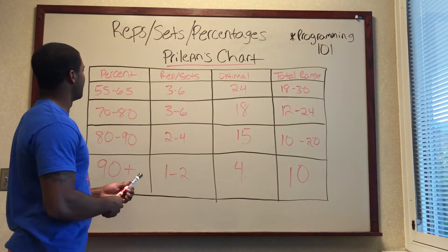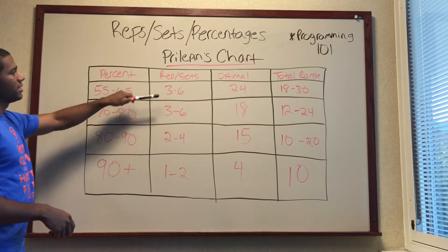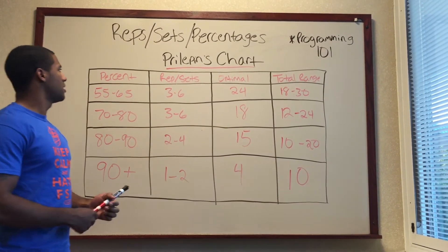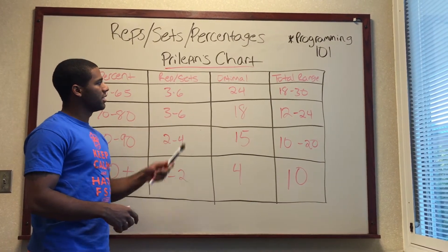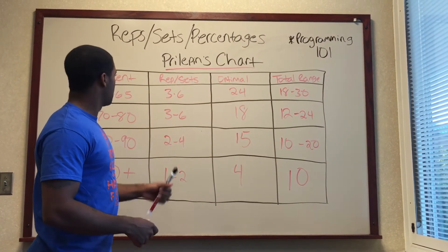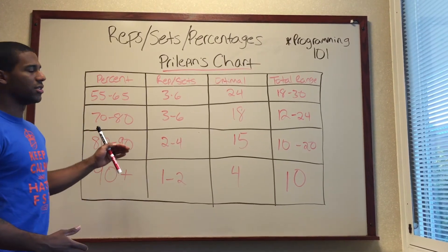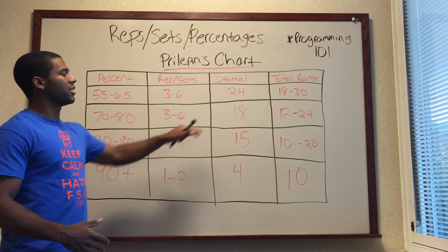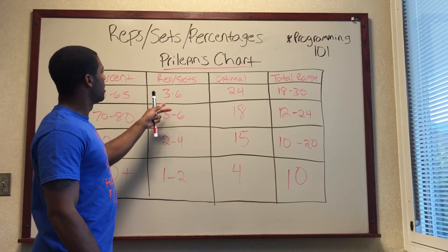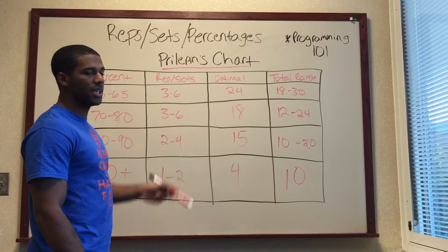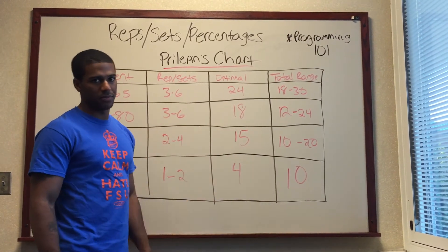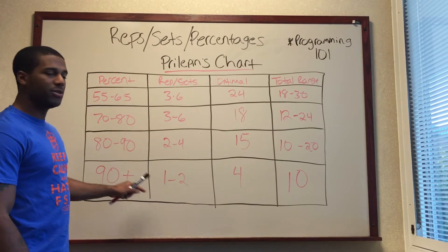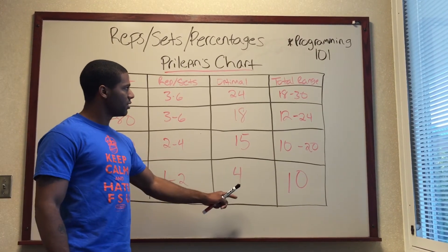This is going to keep you safe in the gym. We've got percentages here, reps and sets, the optimal, and the total range. So at 55 to 65% the reps and sets are 3 to 6 and the optimal is 24. That means somebody goes into the gym and uses 55 to 65% of their one-rep max and tries to hit the optimal rep range — so three sets of eight gives them 24. Same thing at 90 plus: the optimal is 4, so two sets of two gets you there.